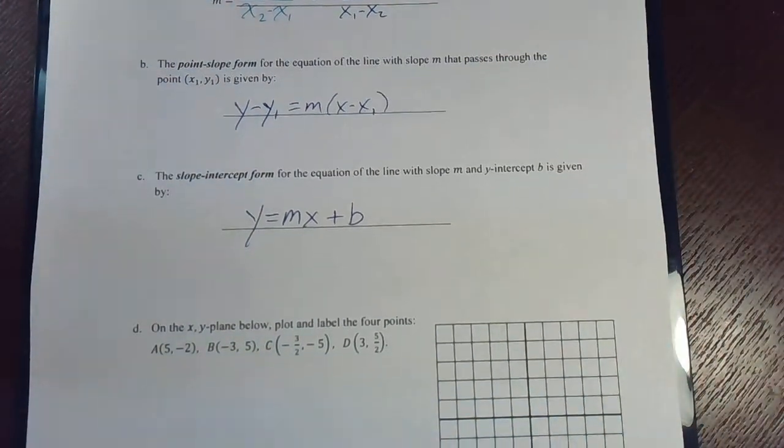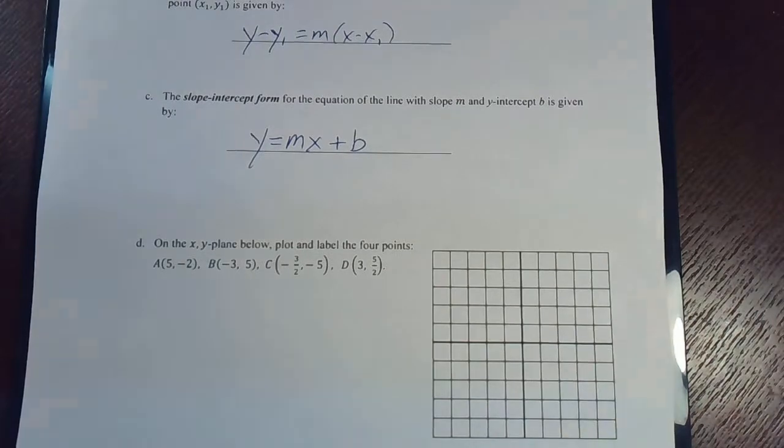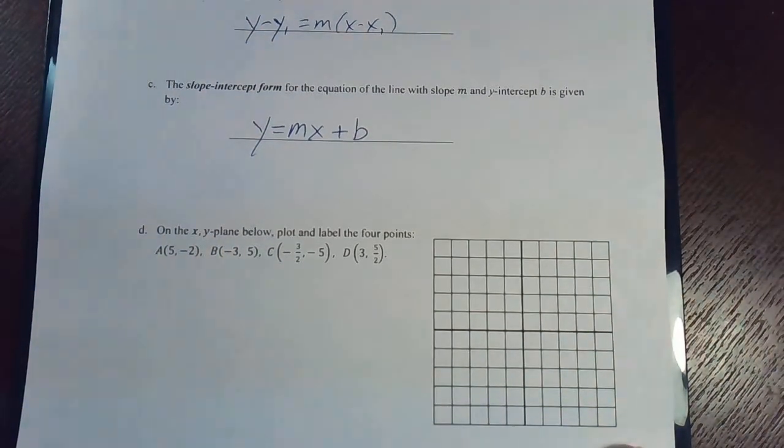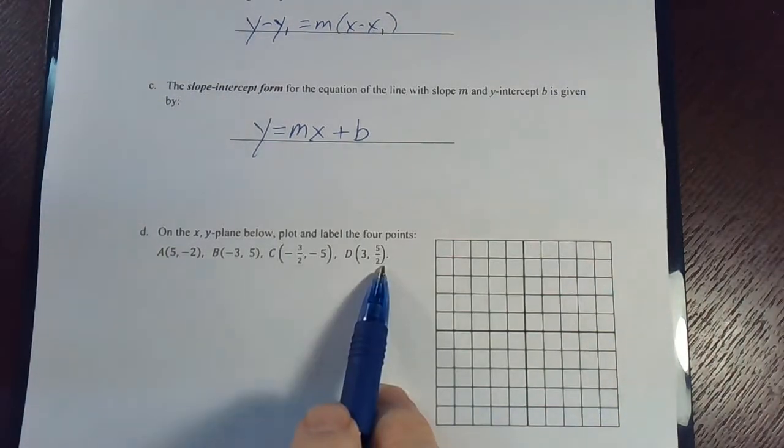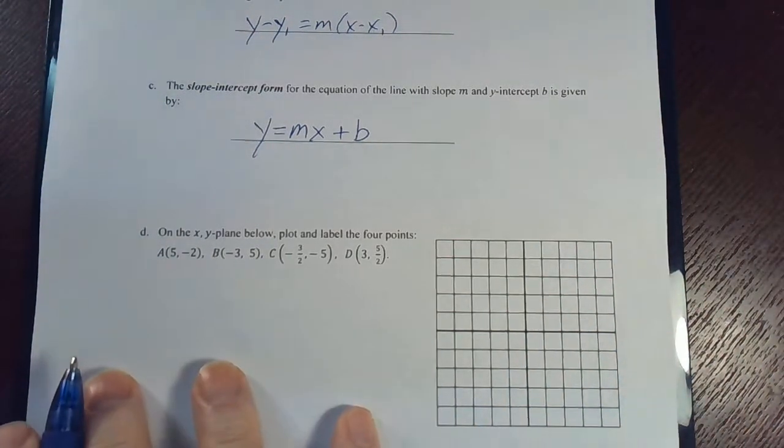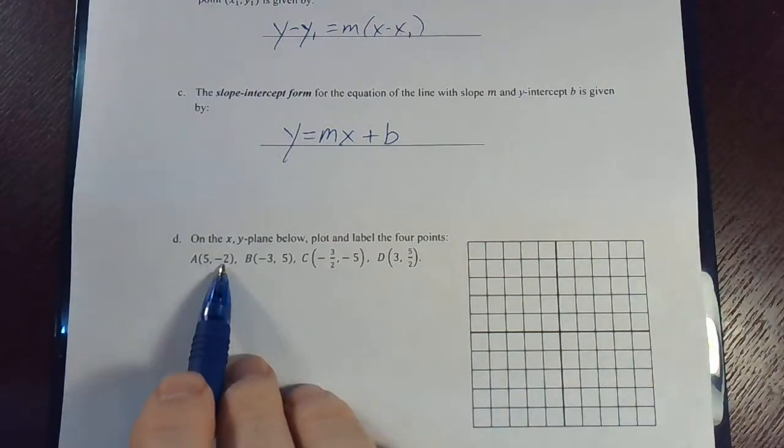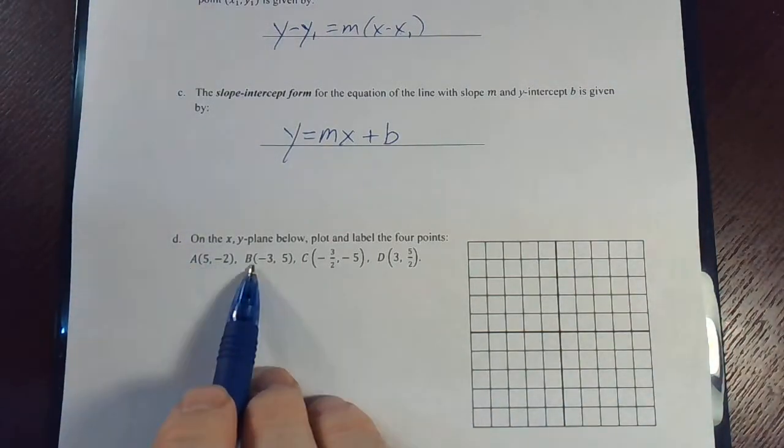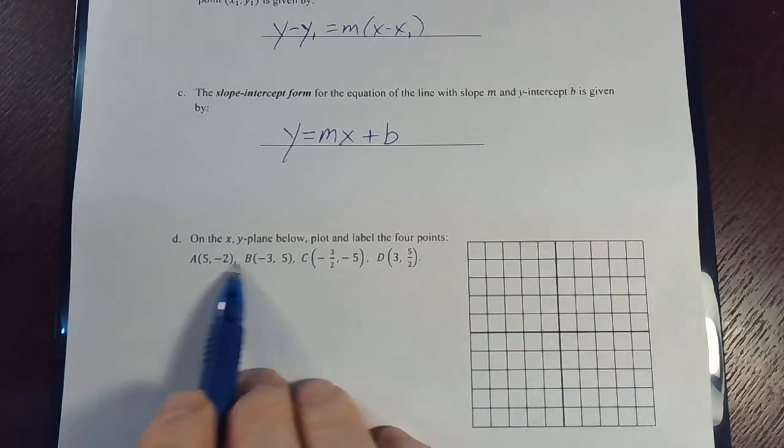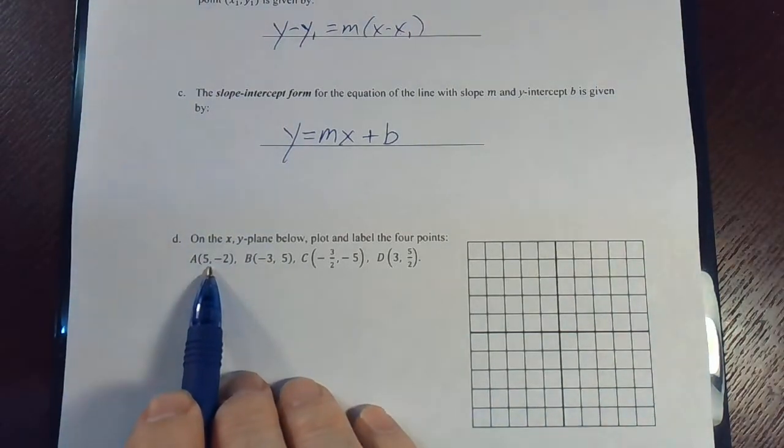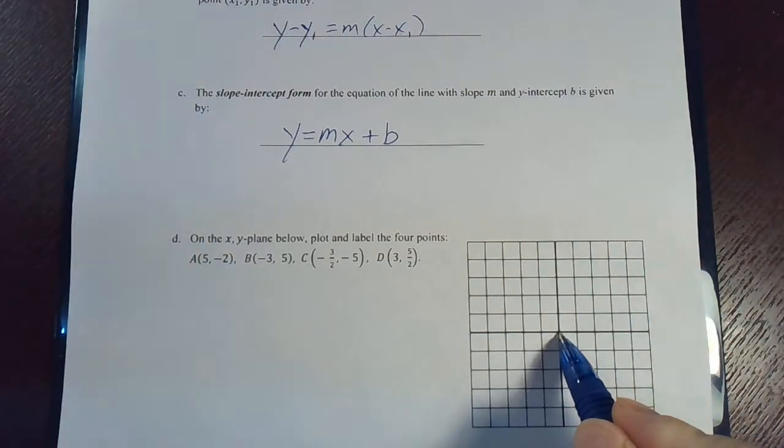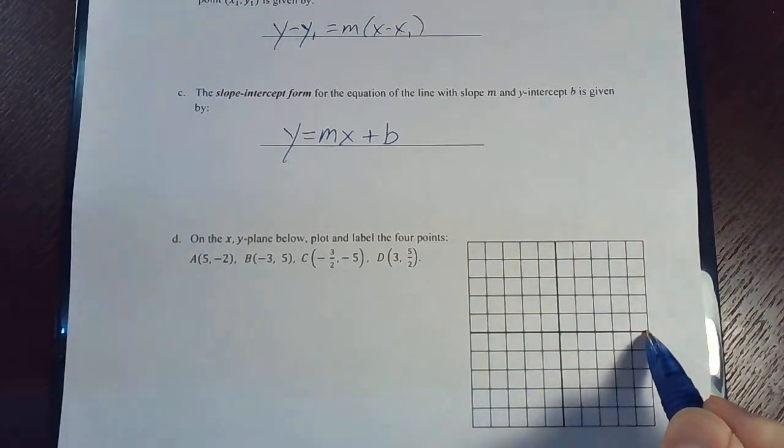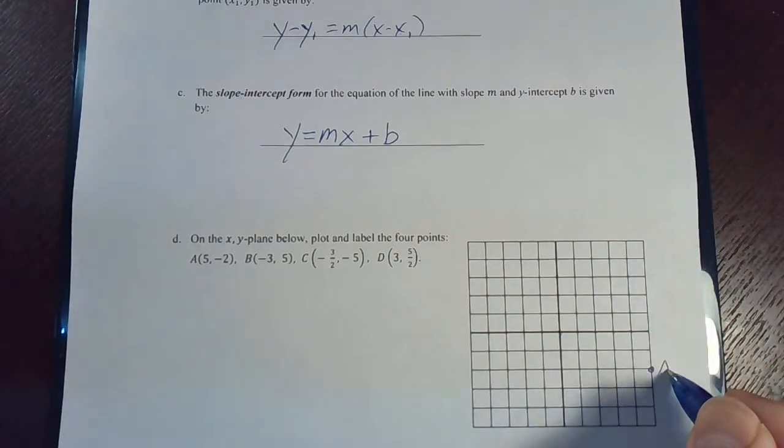For the last part of this video, we're just going to plot a few points. We've got these four points, just plot them. Remember that the first term is the x and the second term is the y. The a, b, c, and d is just a way to label the points. So point a is five comma negative two, which would be... here's the origin. So go one, two, three, four, five to the right, and then down two. We could just label that one as a.